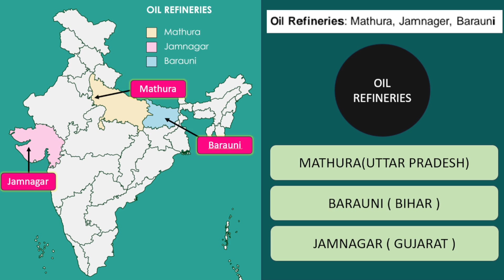Next is oil refineries — the three are Mathura, Jamnagar and Barauni. Mathura is in Western Uttar Pradesh, Barauni is in Central Bihar, and Jamnagar is in Gujarat. So these are the leading oil refineries.